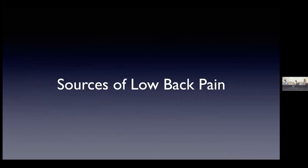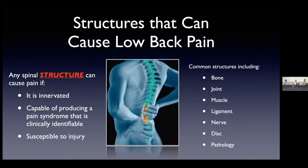What are the sources of low back pain? Any structure in the spine can cause pain if it's innervated, and a structure can cause pain only if it can produce a clinically identifiable pain syndrome. Any structure in the back that's susceptible to injury can cause pain — bones, joints, muscles, ligaments, nerves. Disc problems can cause pain, and pathology such as cancer.